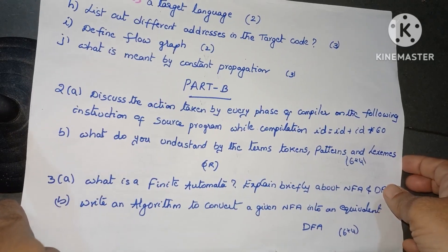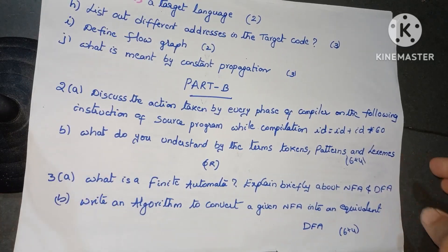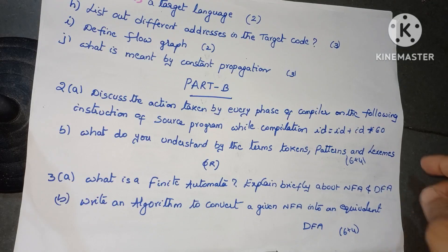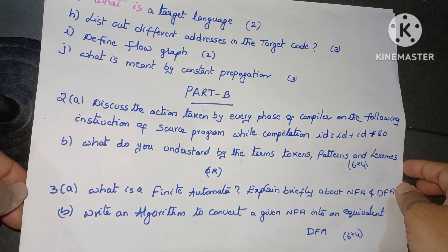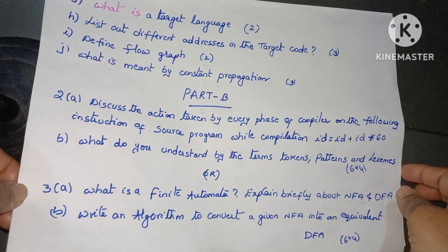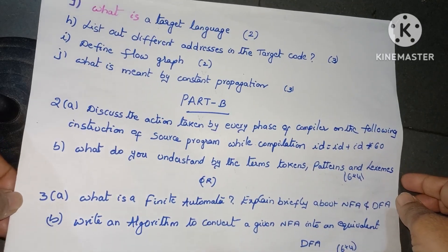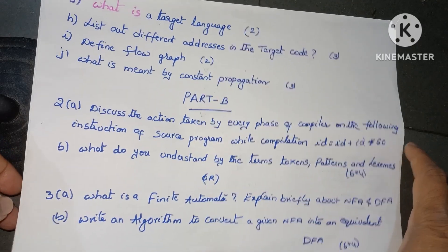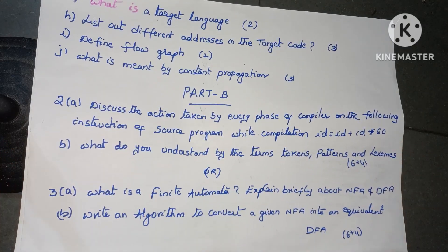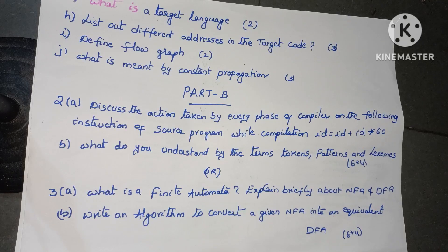H: list out different addresses in the target code, 3 marks. I bit: define flow graph, 2 marks. J bit: what is meant by constant propagation, 3 marks. All these questions form Part A for 25 marks.